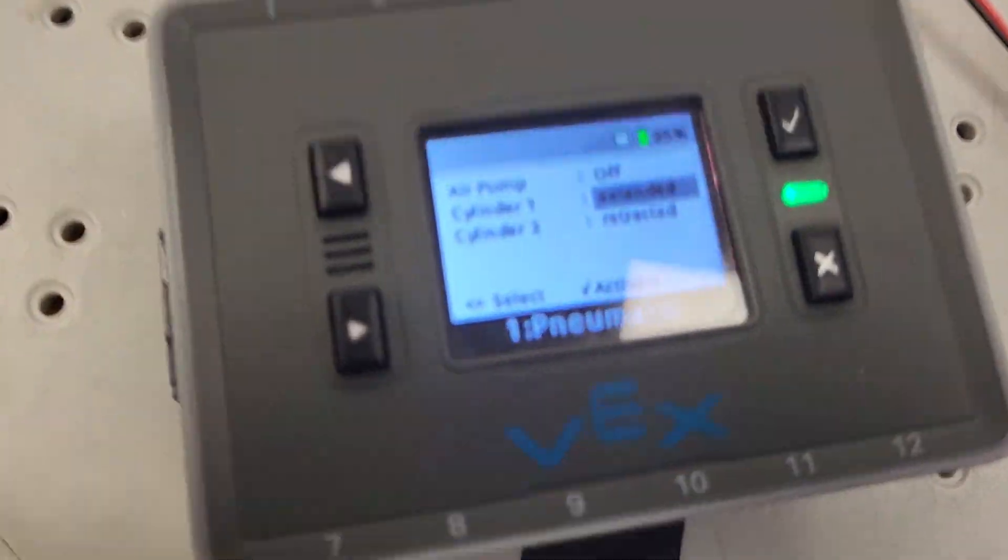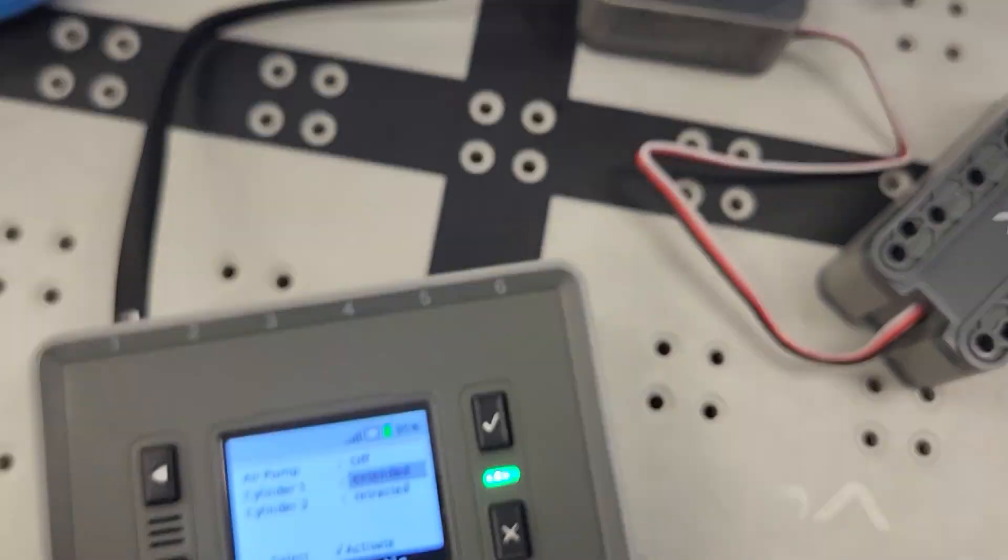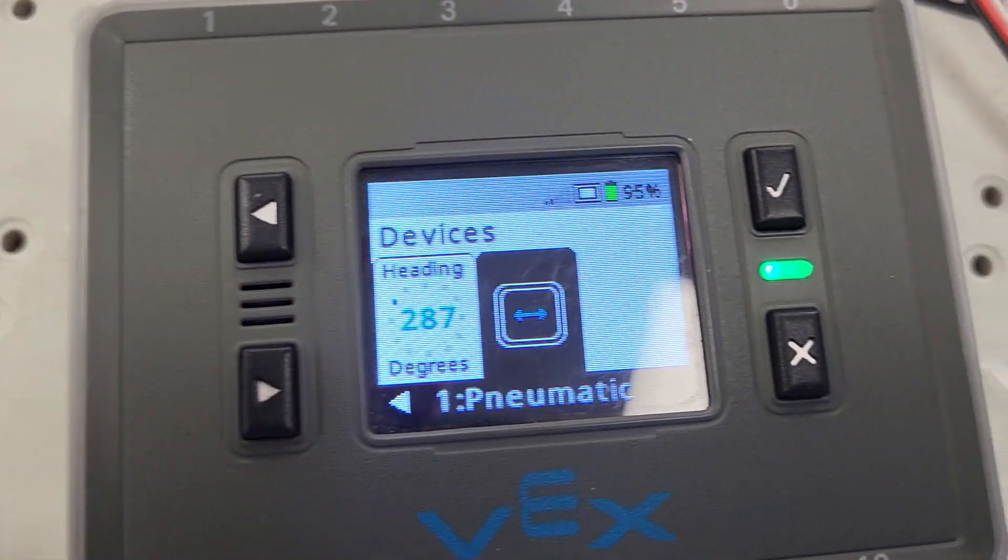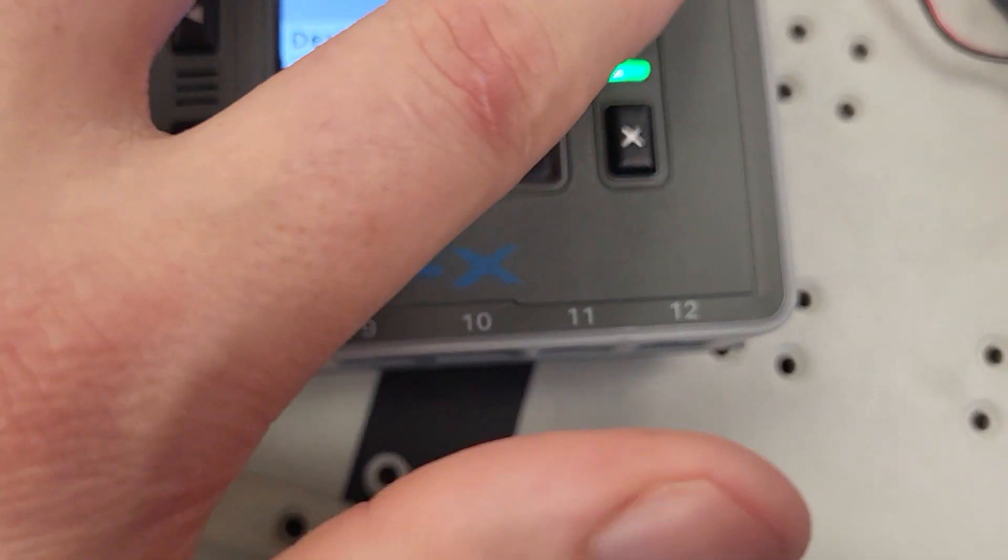Hey, just a very quick first look at the VEX IQ. It's all set up in your brain so you can go to devices and you'll see the pneumatic there.